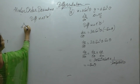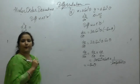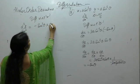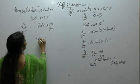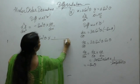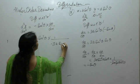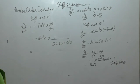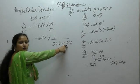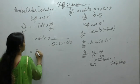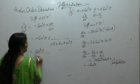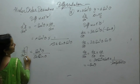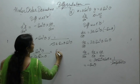Now dy/dx equals (dy/dθ) times (dθ/dx). dy/dθ is 3a sin²θ cosθ, divided by minus 3a sinθ cos²θ. Cancelling 3a, sinθ, and cosθ, we get sinθ upon cosθ, which equals tan θ. Now differentiate again with respect to x: d²y/dx² is derivative of tanθ, which is sec²θ, times dθ/dx.